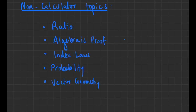Now of course this does not guarantee that they'll come up in the next set of exams, but it gives a pretty high chance — it's an educated guess. So the topics are ratio, algebraic proof, index laws, probability, and vector geometry, and I'm going to go ahead and look at some example questions that you can have a go at to revise.